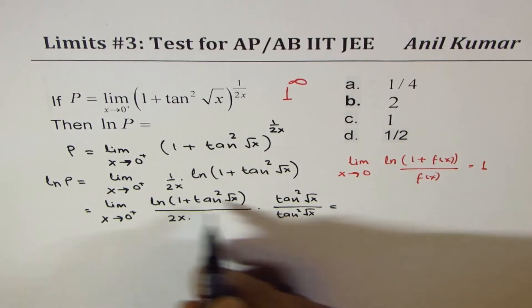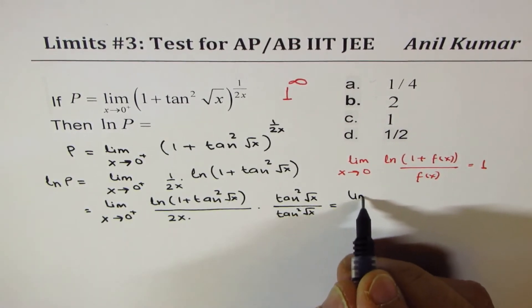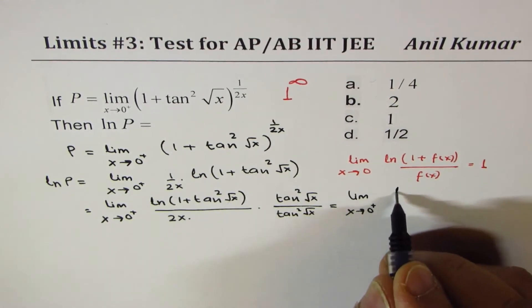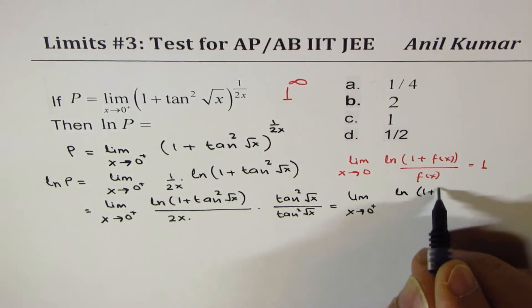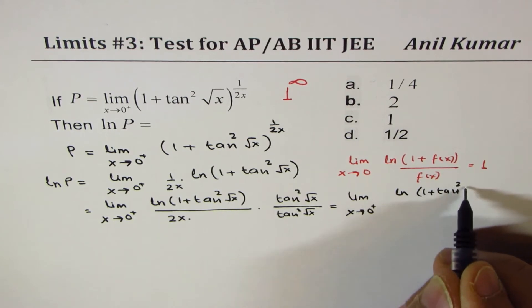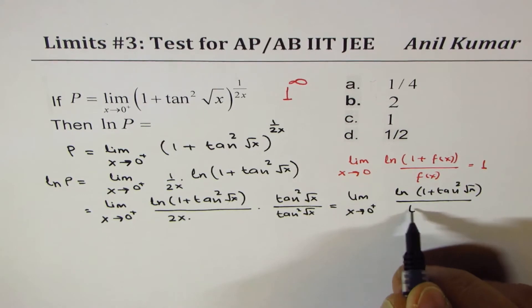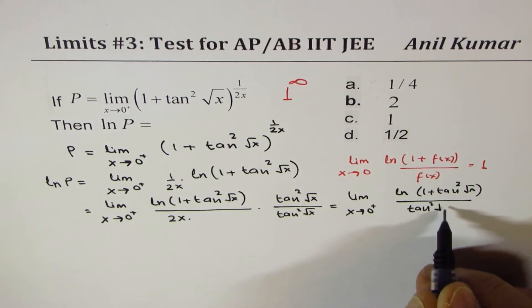Now, you could rearrange this and write it as limit x approaches 0 plus. We have ln(1 + tan²√x) over tan²√x.